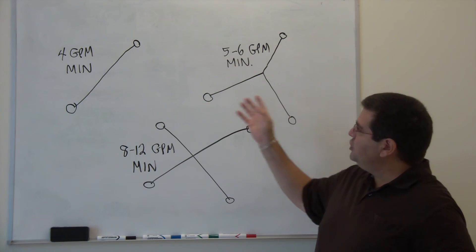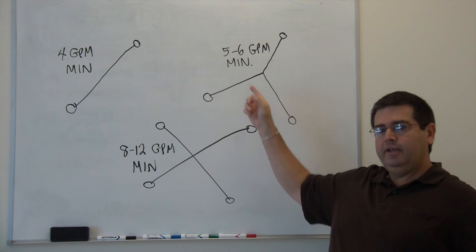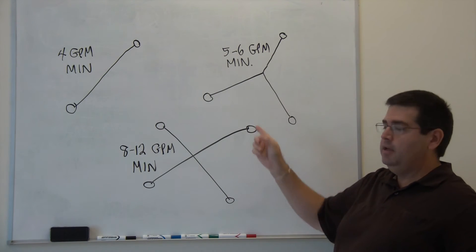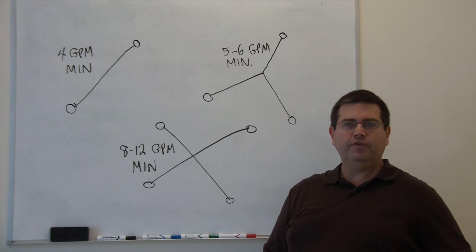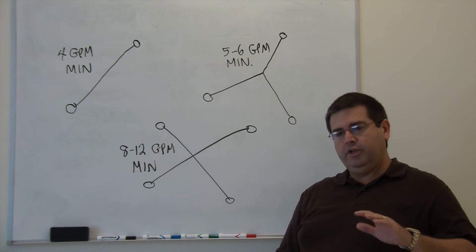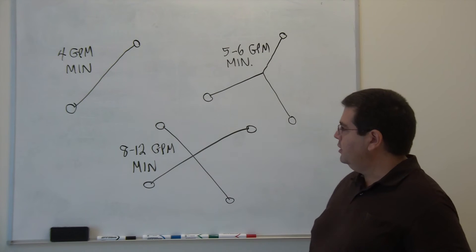If you're using a machine with four gallons a minute, then you'll notice that you're going to be greatly minimizing the flow rate out of each tip. And by doing that, you're going to have to make more slow, deliberate passes over your surface. So make sure you choose the bar that's appropriate for the machine that you're using.